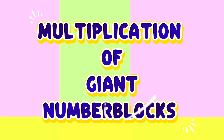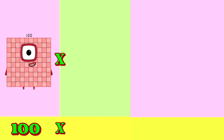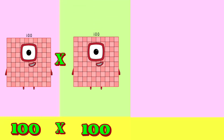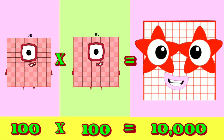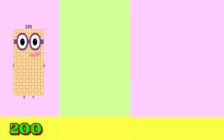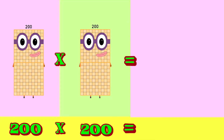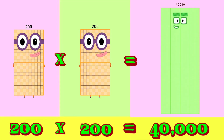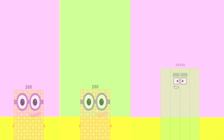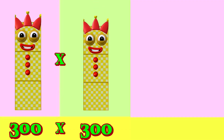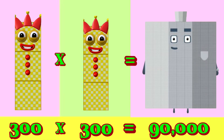Multiplication of Giant Number Blocks — Let's go! 100 times 100 is equals to 10,000. 200 multiply by 200 is equals to 40,000. 300 multiply by 300 is equals to 90,000.